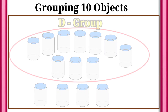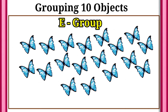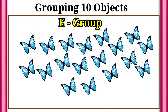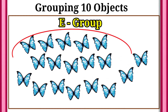Then there are E group of objects. How many objects here? 18. Very good. Let's circle 10 objects.